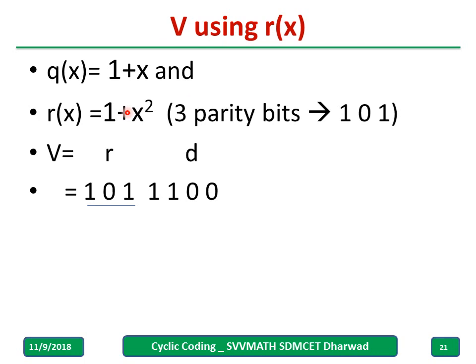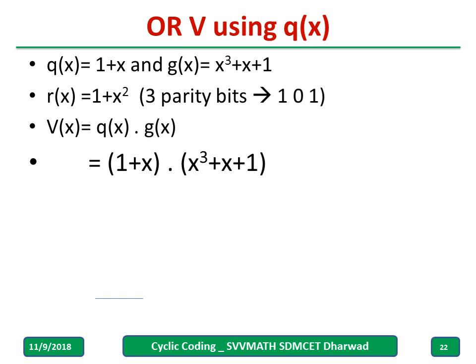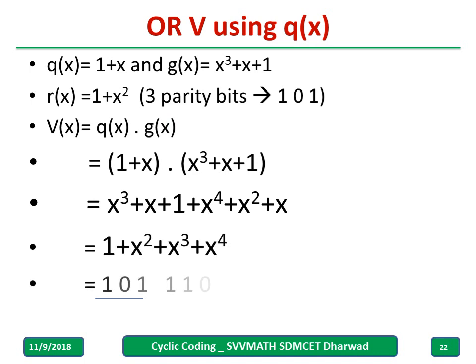Using r(x), 1 + X + X² + X³ that I want. Now r(x) is 1 + X² hence 101 and data bit as it is. This is using r(x) and total codeword I am writing. Similarly I can write using q(x) also. Simply multiply q(x) into g(x), you will get a codeword and write down in the increasing order. And total bits are and we have parity bits and data bits.